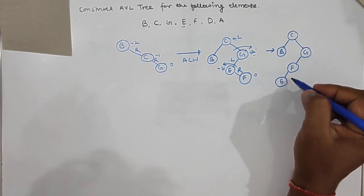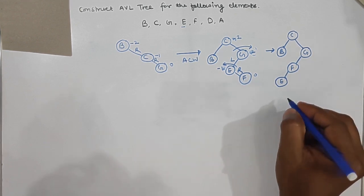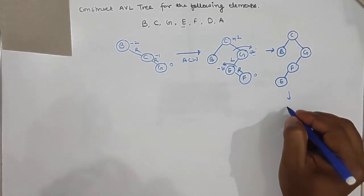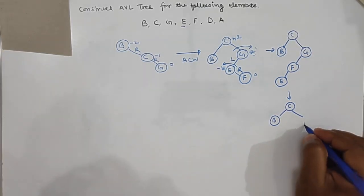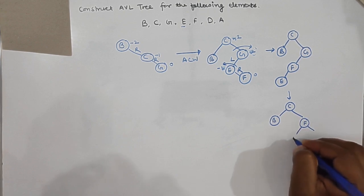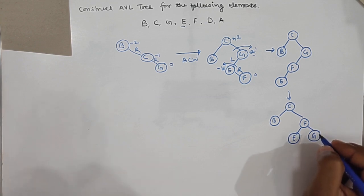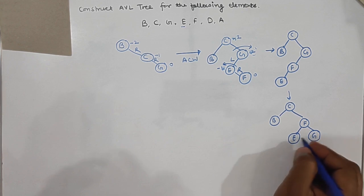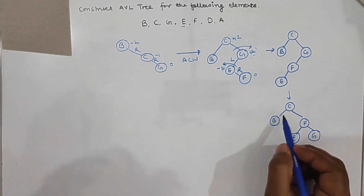After the RR rotation (anti-clockwise), we perform the LR rotation. The tree then looks like: c is the parent with b on the left. F becomes the new sub-root with e on the left side and g on the right side. The balance factor of each node is checked — all leaf nodes have 0, this node has 0, so the tree is balanced.